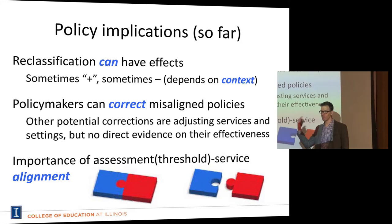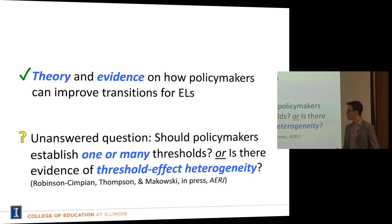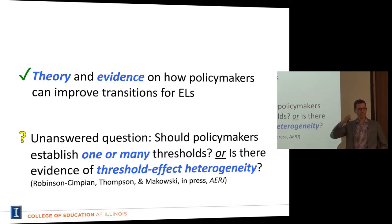So far I've talked about theory and evidence on how policymakers can improve transitions for English language learners. But there's a whole bunch of questions left unanswered. One is: should policymakers establish one threshold or many thresholds? Another way of asking this: is there evidence of threshold effect heterogeneity — would we see different effects for different kids or different school systems under the same threshold?